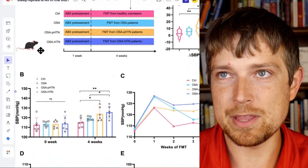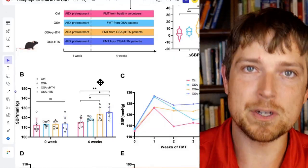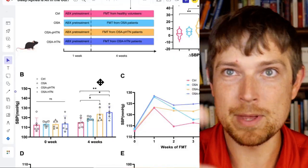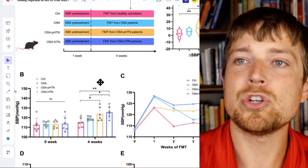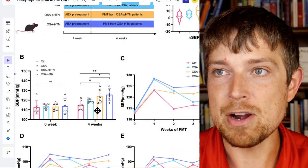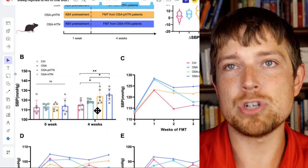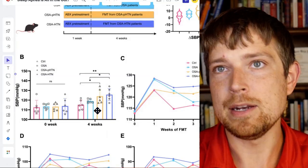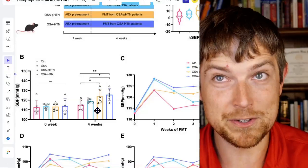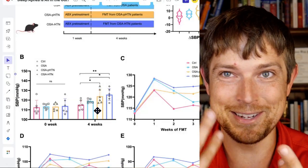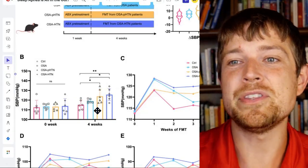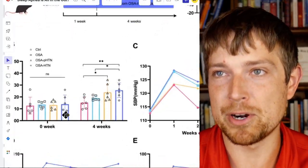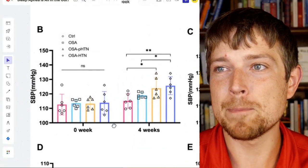What they found in very short order is that these mice now with the obstructive sleep apnea gut microbiome - that's the important part - they started to show very quickly some of the downstream effects of having obstructive sleep apnea. Now you can't really precisely measure obstructive sleep apnea in mice, very different parameters and all that, but the downstream effects, especially blood pressure, if we look here, match up pretty closely.